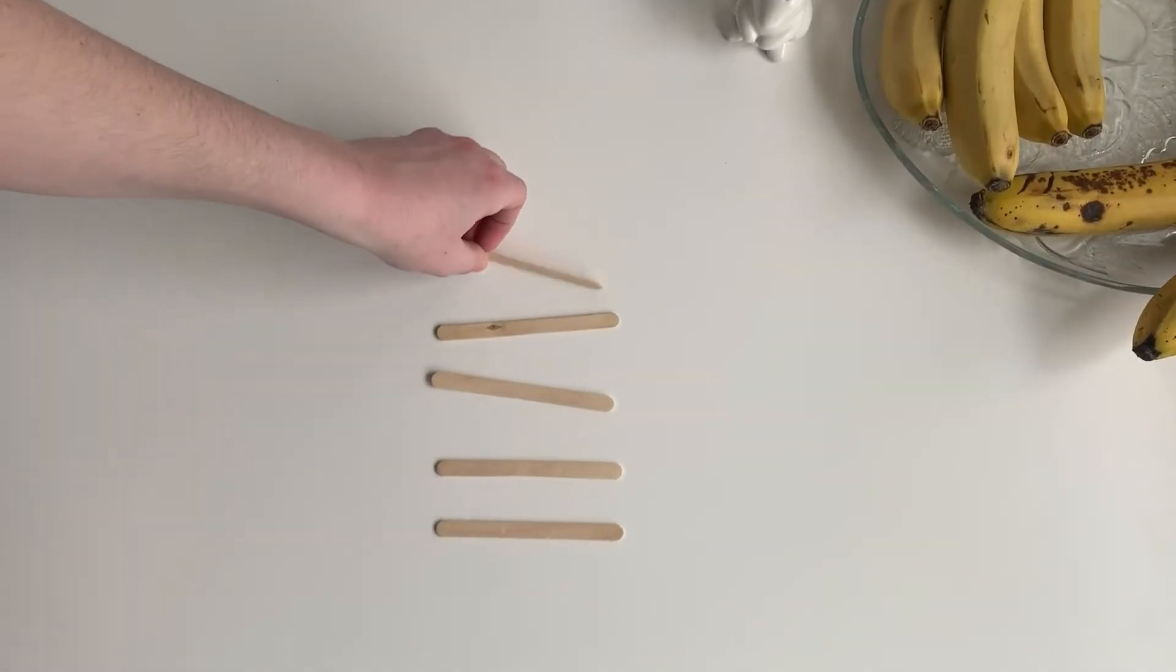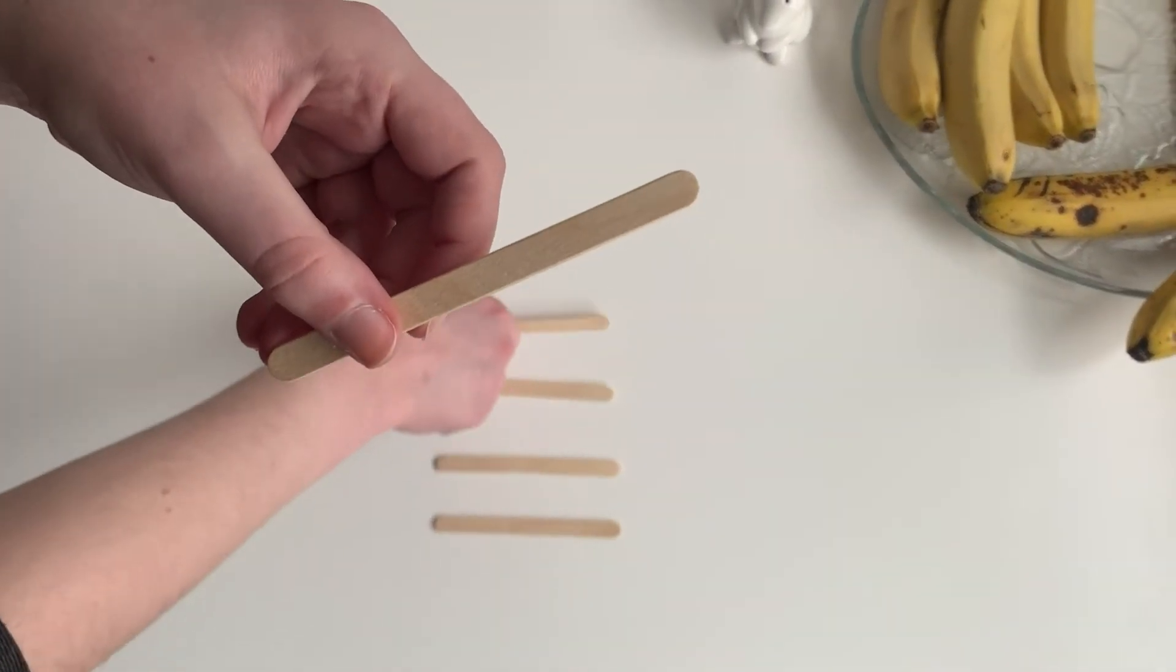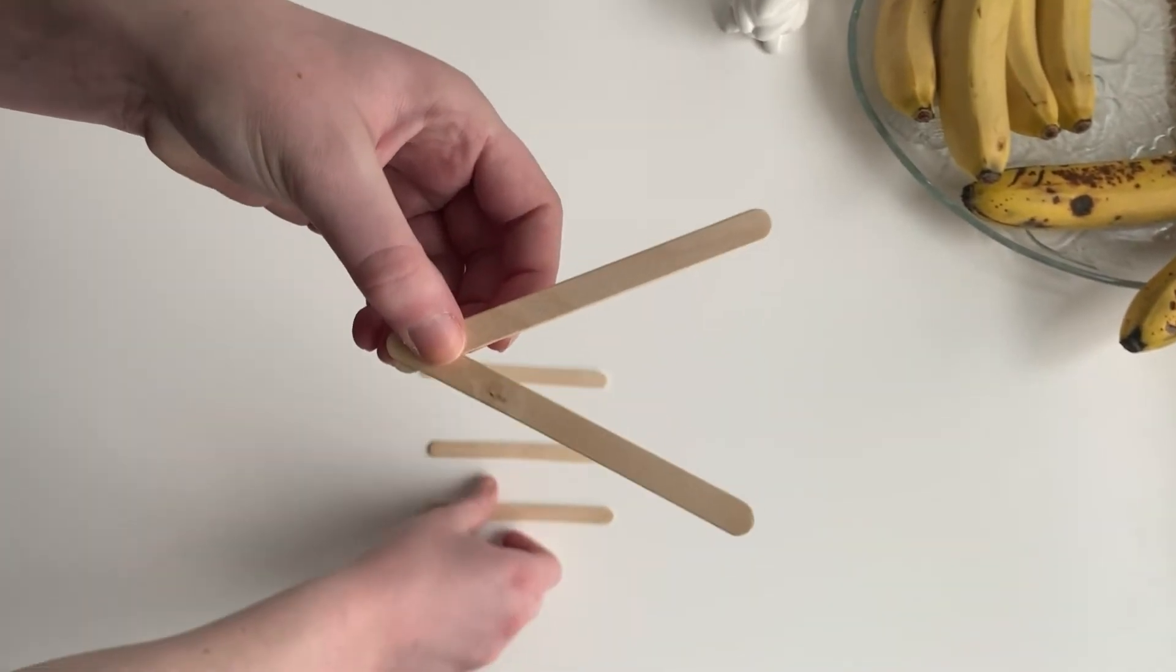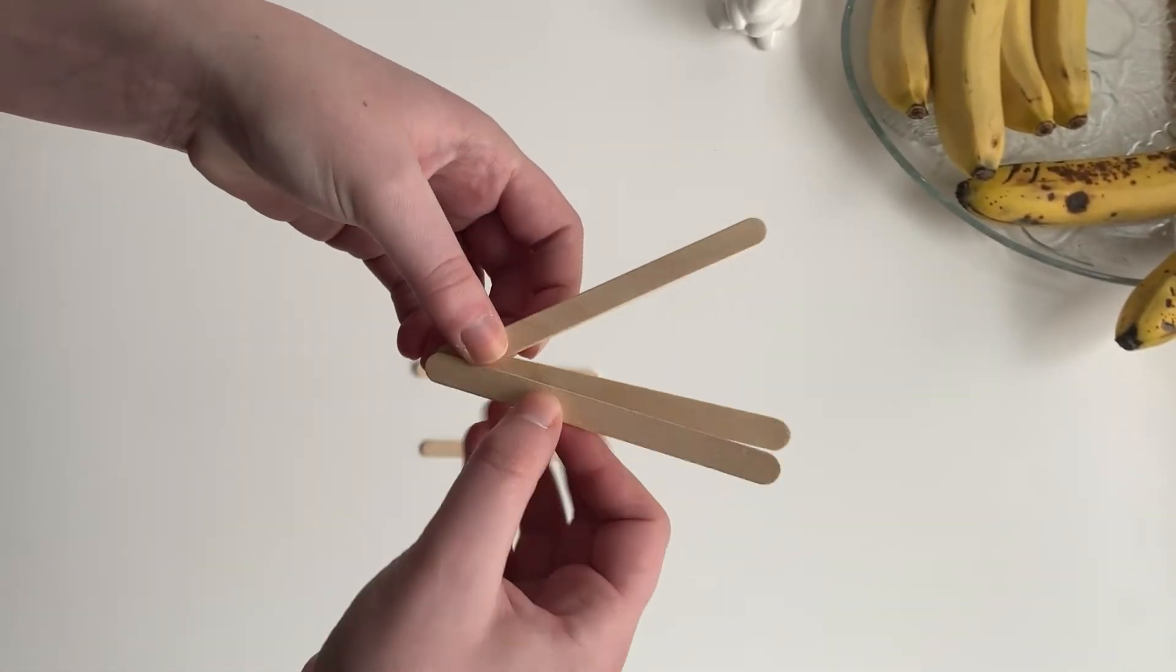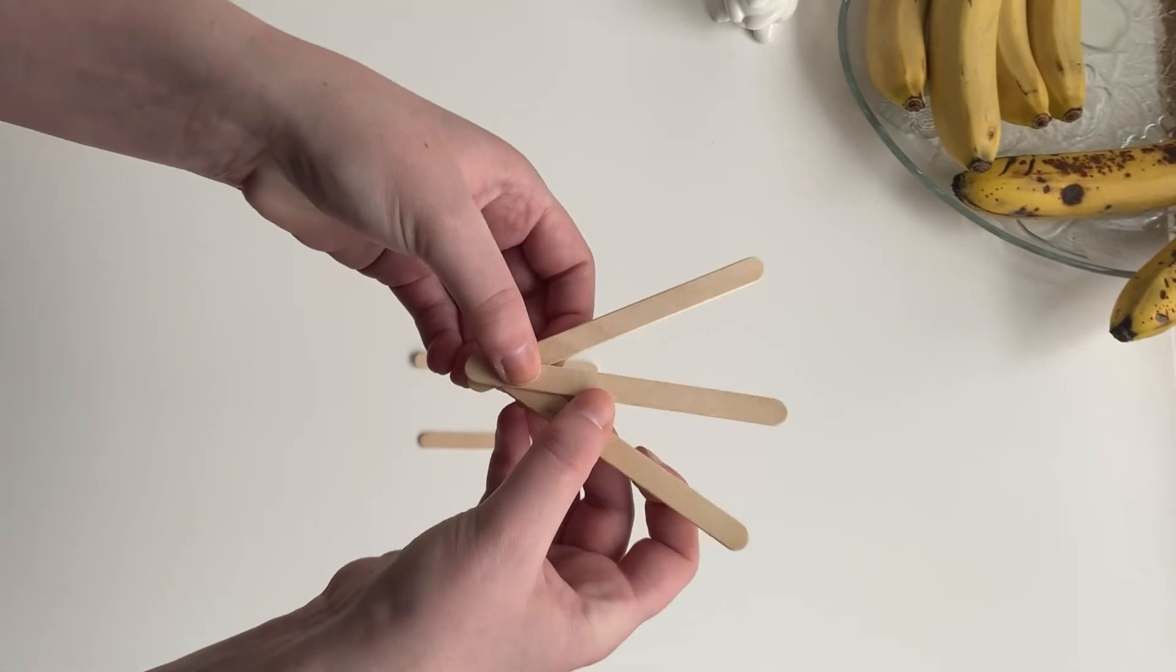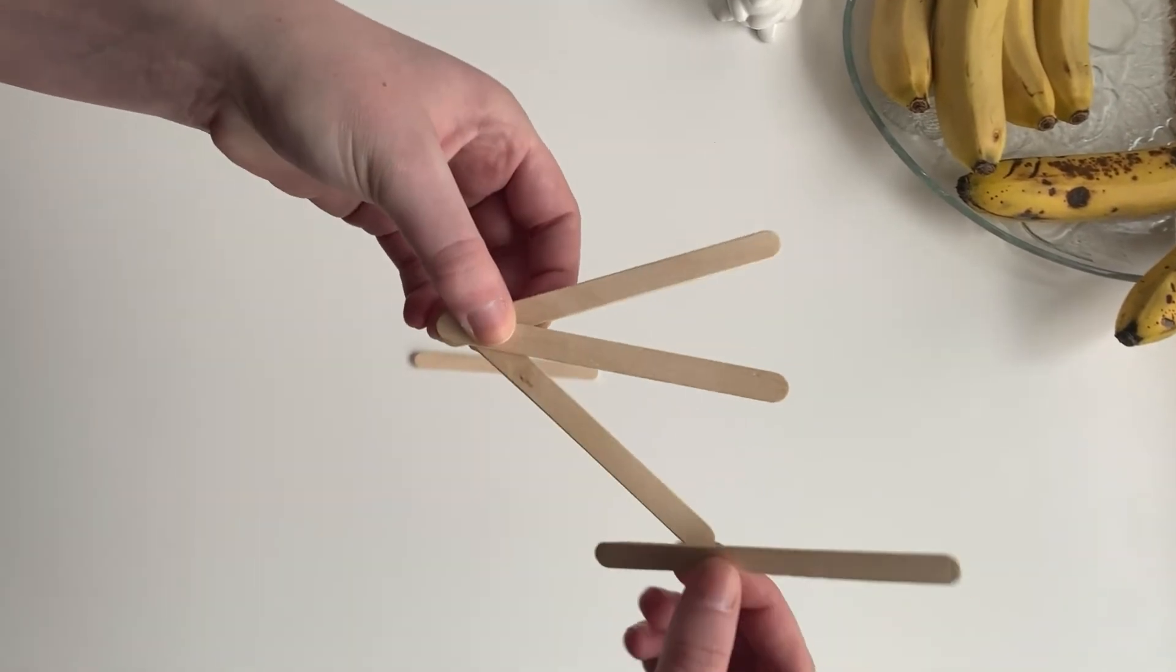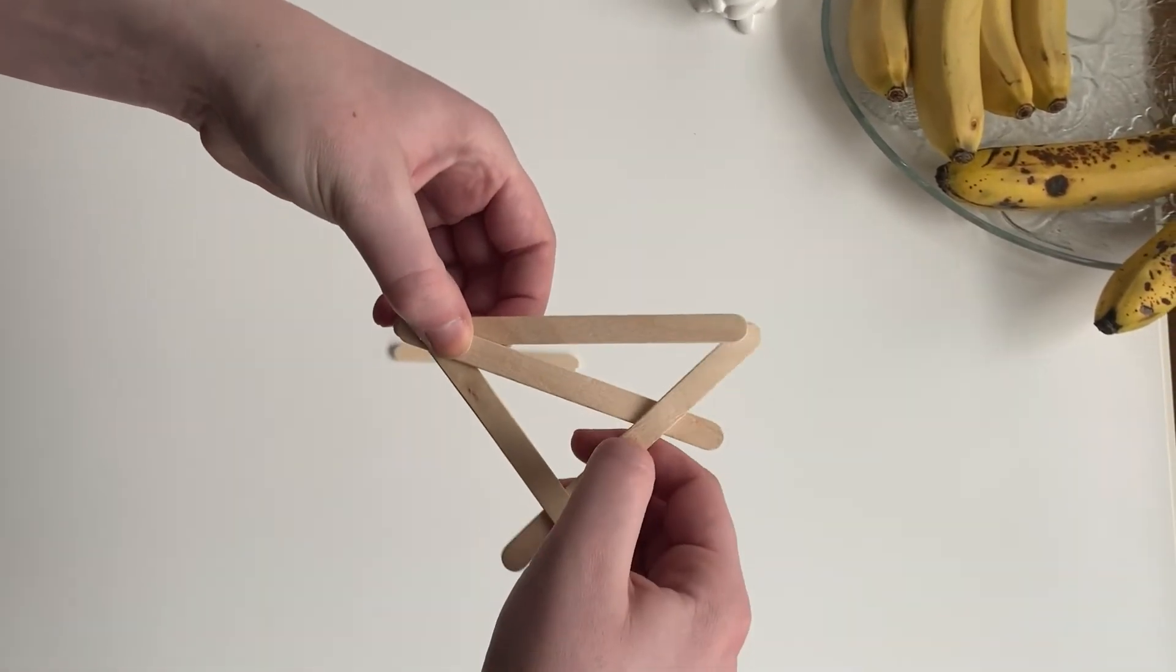Let me show you how it works. When we weave the sticks together, we are creating opposing forces. Some sticks are being pulled up and others down. When all the sticks are in place, the forces pushing up and pushing down are equal, so nothing happens.